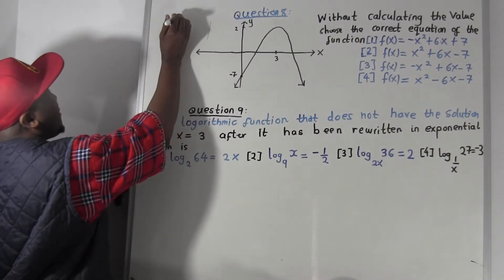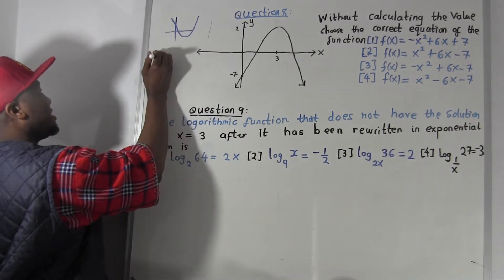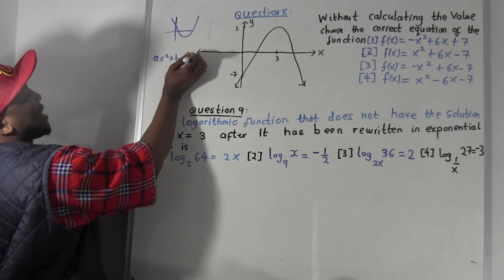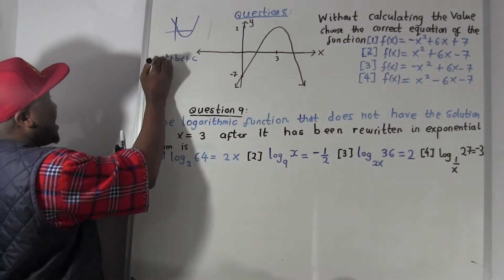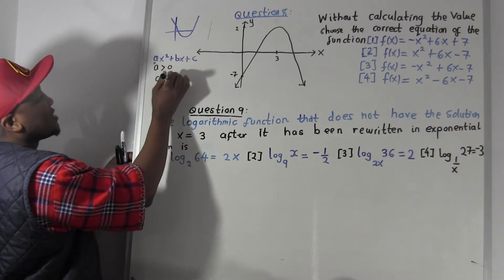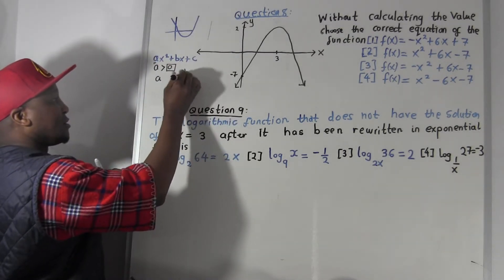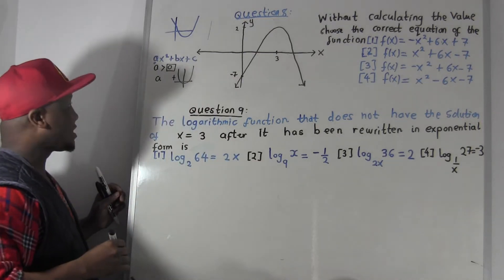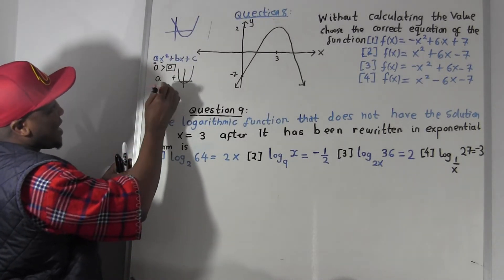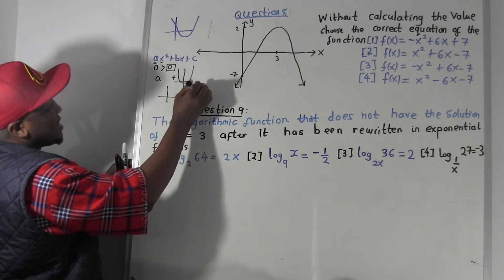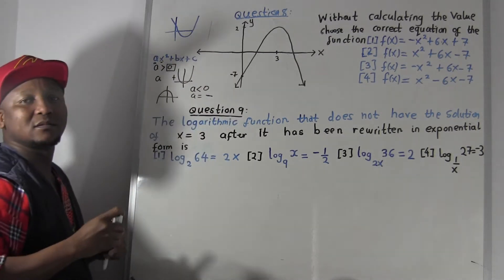Whenever you have a parabola — this is parabolic — the general question is quadratic ax² + bx + c. If 'a' is greater than zero, meaning 'a' is positive, the graph curves upward. But if 'a' is less than zero, meaning 'a' is a negative number, the graph is going to curve downward. Keep that in mind.